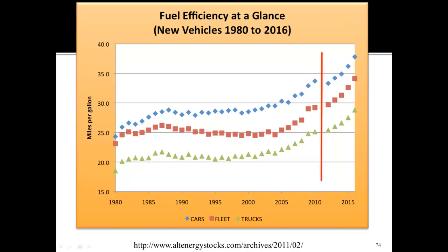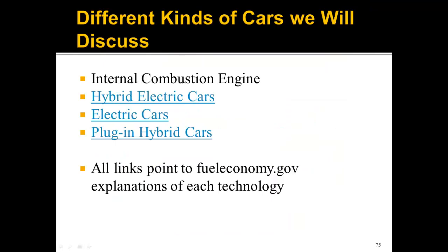I want to go over some of the implications of having a more efficient vehicle through some calculations. We're going to discuss four different types of cars. The internal combustion engine is the car we're used to — the six-cylinder engine or the four-cylinder engine. I'm not going to go into too much detail about hybrid electric cars, electric cars, or plug-in hybrid cars, but I am going to use a lot of their implications when we do efficiency calculations.